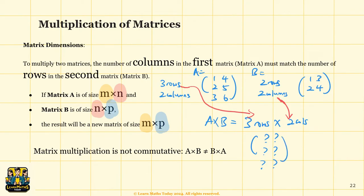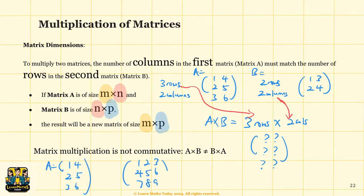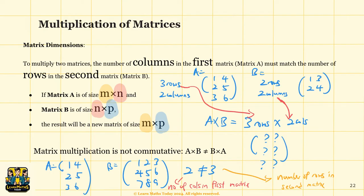If we have an example where A equals 1, 4, 2, 5, 5, 6 — with 3 rows and 2 columns — and B has 3 rows and 3 columns, in this case the number of columns in matrix A is 2, but the number of rows in matrix B is 3. Since they are not equal, this operation is not possible.